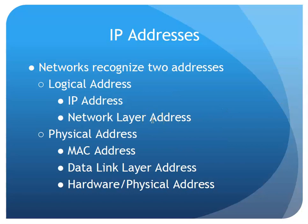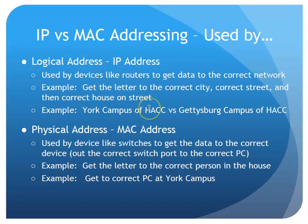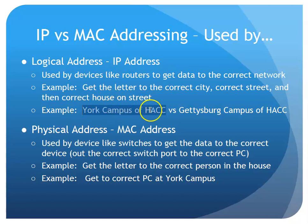On our network, there are two main addresses we work with: our logical and our physical. The logical being the IP address, the network layer address, and the physical being the MAC address, the data link layer address. The IP address is used by devices like routers to get data to the correct network — for example, getting to the York campus of HACC versus the Gettysburg campus of HACC.